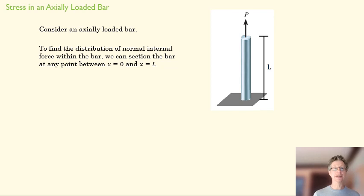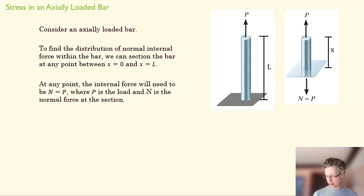So if we wanted to find the distribution of resultant forces in this bar, we could section it between 0 and L, in much the way we've done in the last couple of lectures. And what we'd find is, at any given section, I would have a load in which N was equal to P.